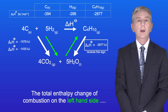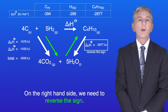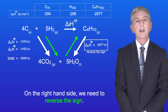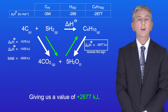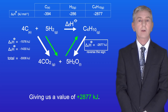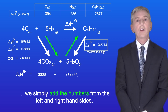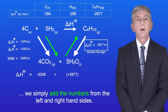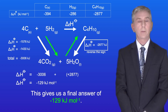The total enthalpy change of combustion on the left hand side is minus 3006 kilojoules. On the right hand side we need to reverse the sign giving us a value of plus 2877 kilojoules. To calculate the standard enthalpy change of formation of butane we simply add the numbers from the left and right hand sides. This gives us a final answer of minus 129 kilojoules per mole.